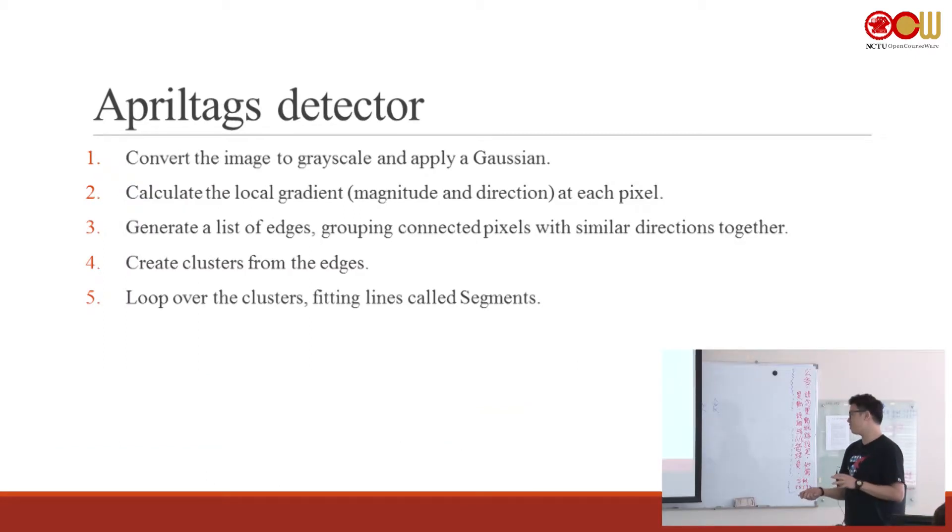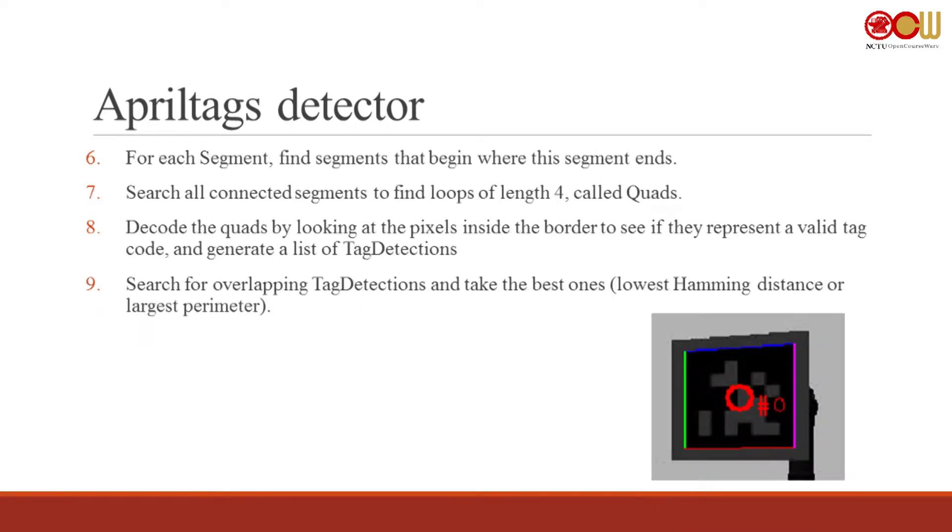The AprilTag Detector works as follows. First preprocessing, then calculate the local gradient of every pixel. Then using the local gradient, generate a list of edges. Using these edges, form clusters which fit lines we call segments. Find the connector segments. Once you find at least four connector segments, this is called a quad, and decode the quad to generate the tag detections. Then using and overlapping the tag detection list, you can find the lowest hamming distance, which is the most relevant tag of the image.